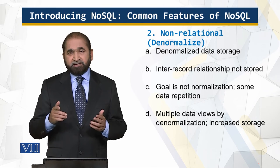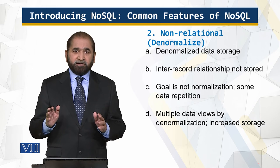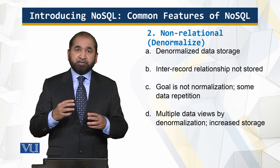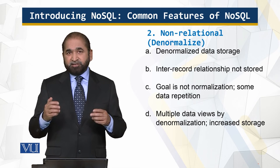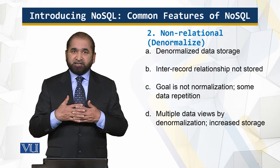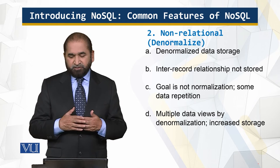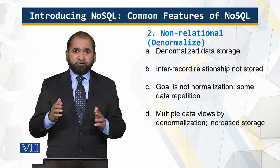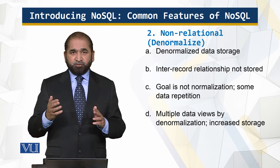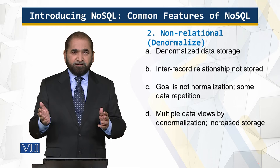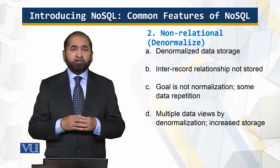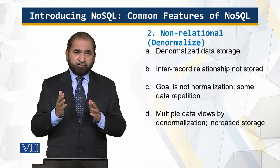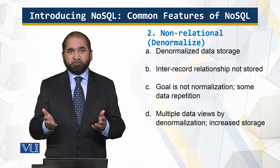Joins take a lot of time. The inter-record relationships are not stored. This is a flexibility, because if those relationships are stored, that makes the system rigid. When those relationships are separated and you run a query that looks across those relationships, you need to perform a join, and that join reduces performance. The goal is not normalization — some data is replicated, not all. When the benefit of data replication is obvious, you don't have to go to this table and that table to collect the data. Multiple data views are created by denormalization, which increases storage space because you are replicating data and making different denormalized views.